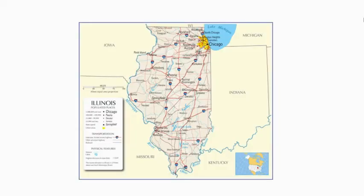Here is an example of a reference map of the state of Illinois. This map features major cities including their populations, roads and highways, and other landmarks like bodies of water. It also shows the relative location of Illinois on a US map. For what purpose might someone use this general reference map?